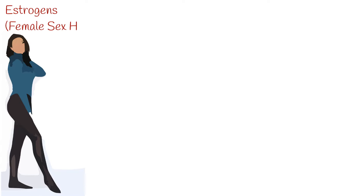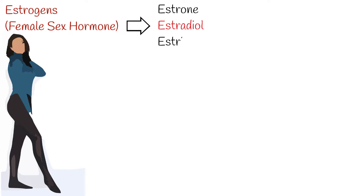Estrogen is a hormone associated with female sex and is responsible for the development of female sexual characteristics. There are three major endogenous estrogens that have estrogenic hormonal activity: estrone, estradiol, and estriol. Estradiol is the most potent and prevalent.